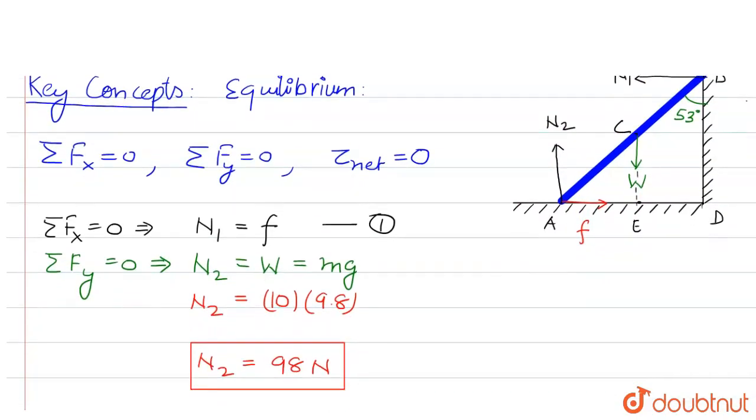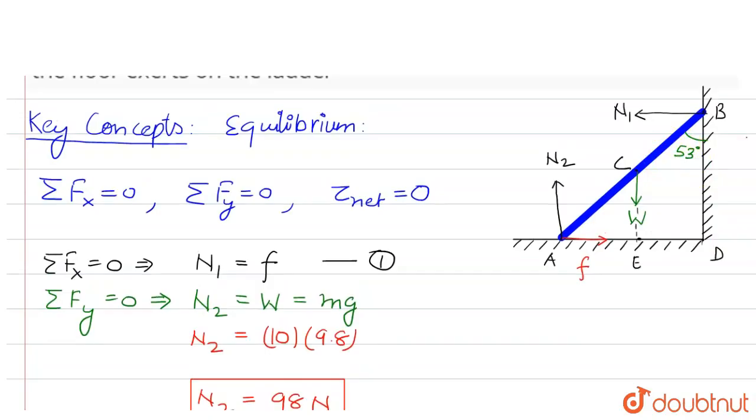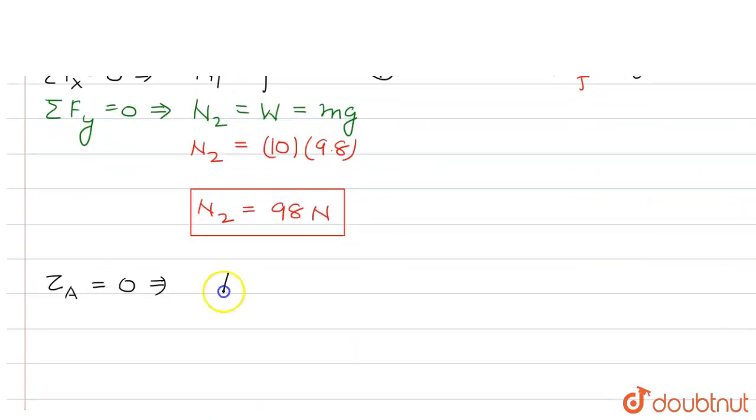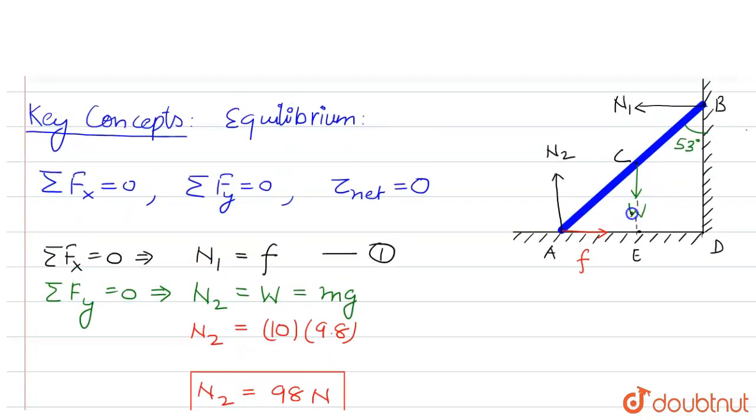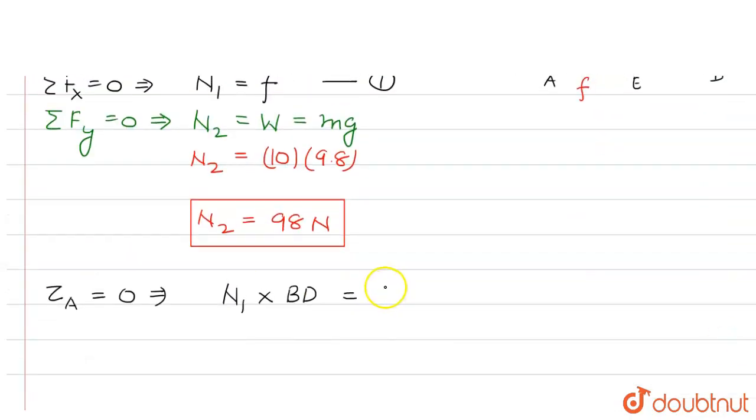So now we can say N1 times BD equals W times AE.